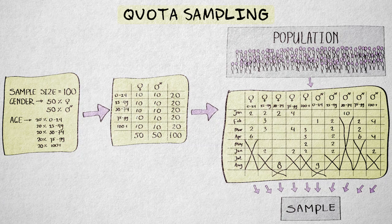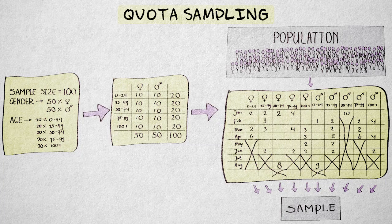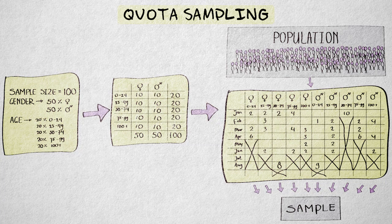But instead of randomly selecting elements from each stratum, participants for each category are selected using convenience sampling. Elements are sampled until the quotas in all categories are met.